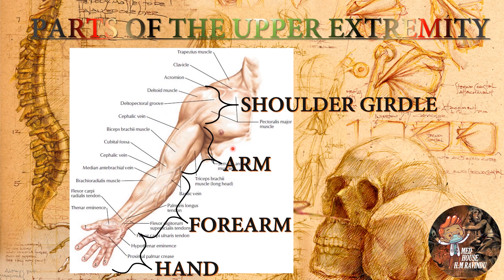First of all, let's see what are the parts of the upper extremity. The upper extremity can be subdivided into four regions: the shoulder girdle, the arm, the forearm, and the hand.